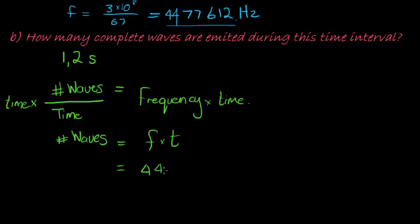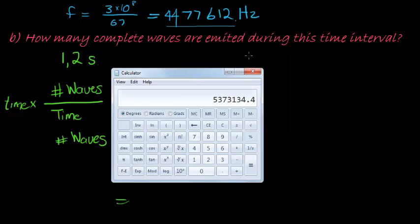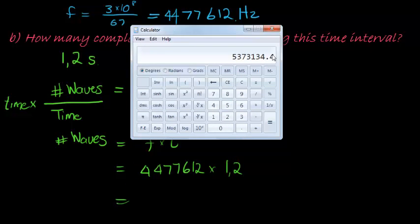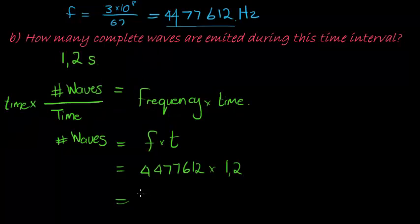And our frequency is 4,477,612. Our time is 1.2 seconds. They said complete waves, which means we ignore the comma. We don't round. We ignore the comma. And complete waves would be 537,134 waves.